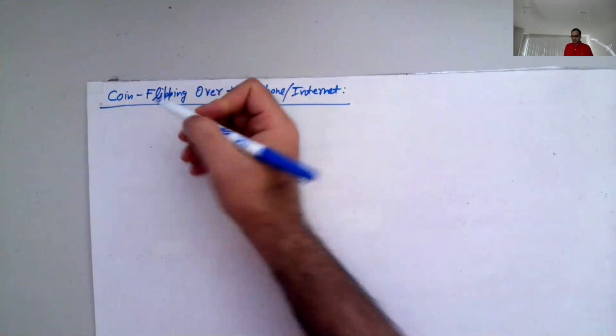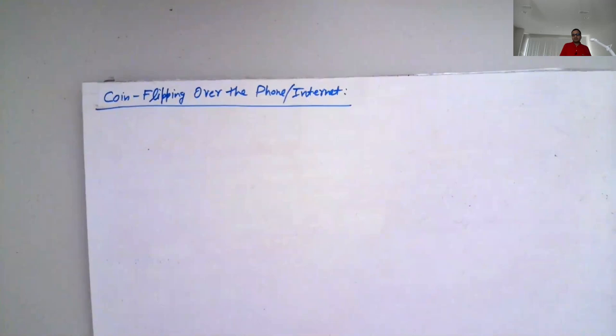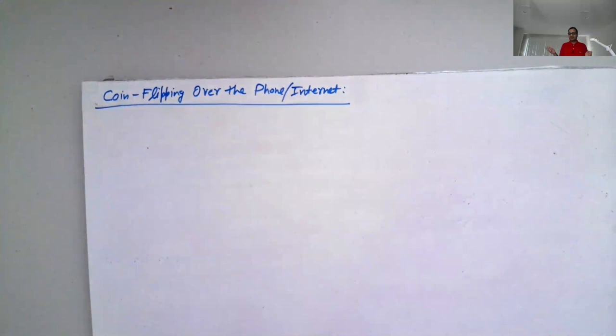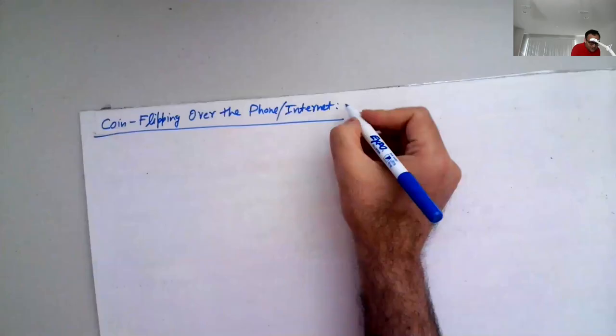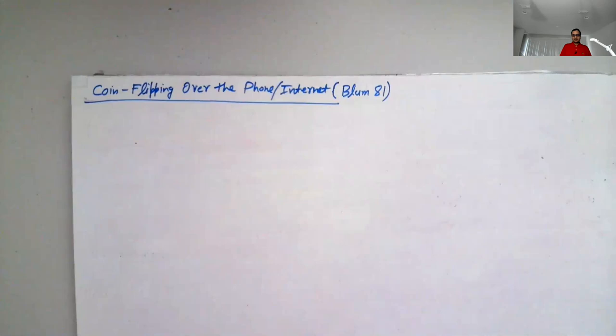The problem is simple. If we're in the same room, we just flip a coin. But consider a scenario where Alice and Bob are getting divorced, hate each other, and must decide who gets to keep the house. They agree to flip a coin but cannot be in the same room. How do they do this without involving any trusted party? In cryptography we don't like trusted parties. This notion was introduced by Manuel Blum in 1981, when modern cryptography was being born.